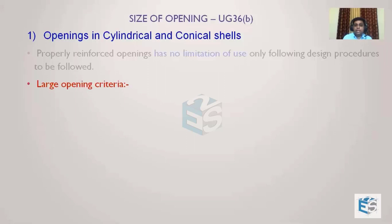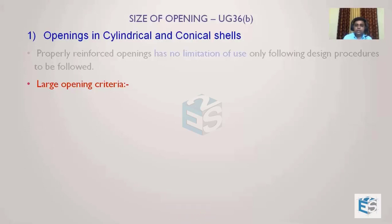The code divides nozzles into two categories: normal openings and large openings. If it is a large opening, there are special requirements — Mandatory Appendix 1, sub-clause 7 must also be satisfied in addition to UG-37.